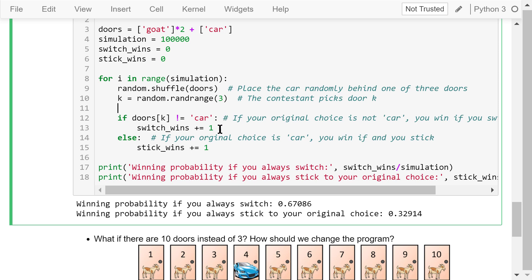If the original choice has no car, then the contestant will win if he or she switches. The number of switch_wins will be increased by 1. Otherwise, the original choice has a car, then the contestant will win if he or she sticks. The number of stick_wins will be increased by 1.